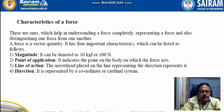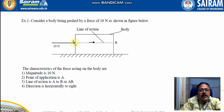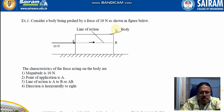Consider a body pushed by a force of 10 Newtons — the magnitude is 10 Newtons, and the point of application is point A. The line of action is horizontal, labeled A-B. For direction, since it is a horizontal force, we specify whether it acts to the left or to the right. For a vertical force, we say upward or downward; for an inclined force, we specify accordingly.